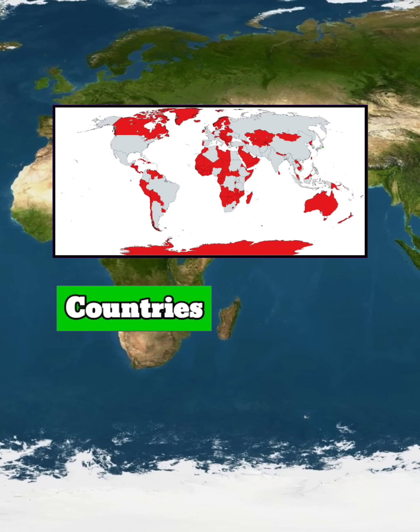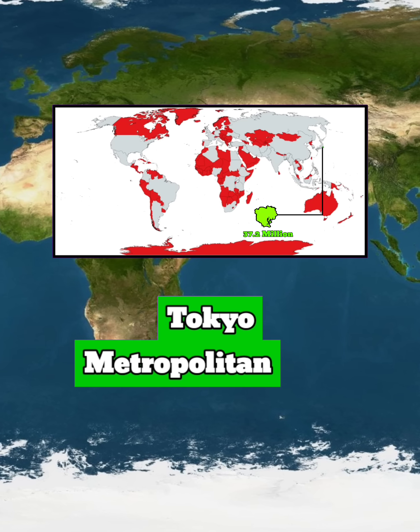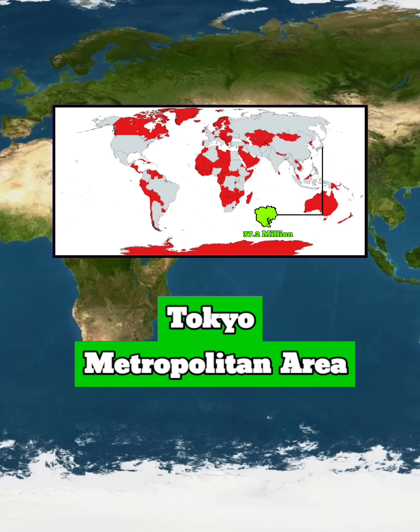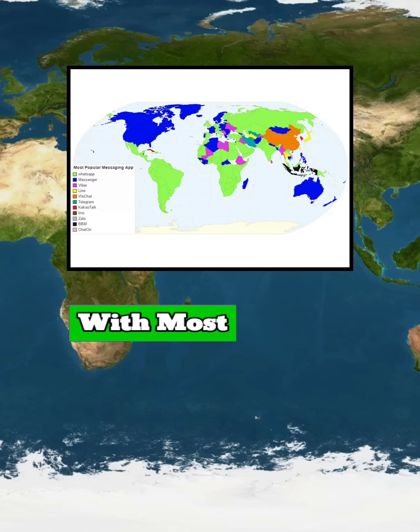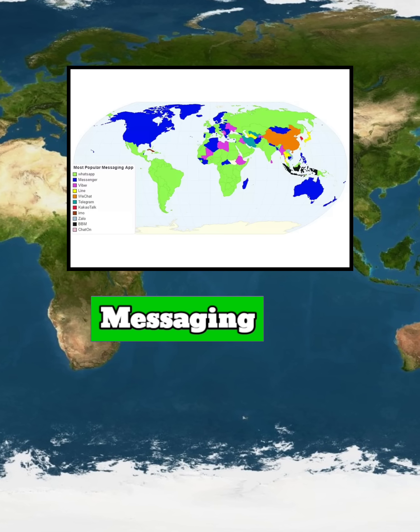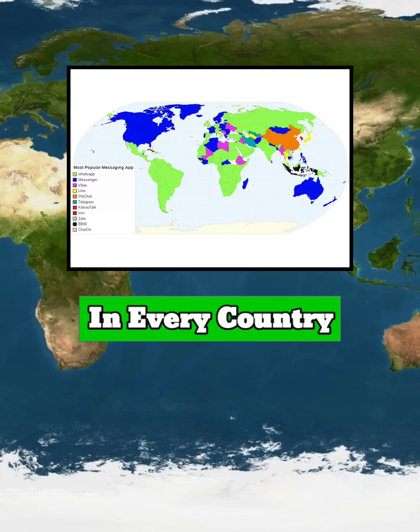These are the countries that have a smaller population than the Tokyo metropolitan area. This is the world map showing the most popular messaging app in every country.